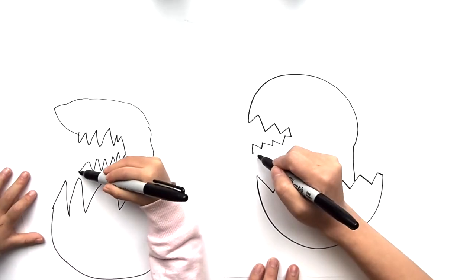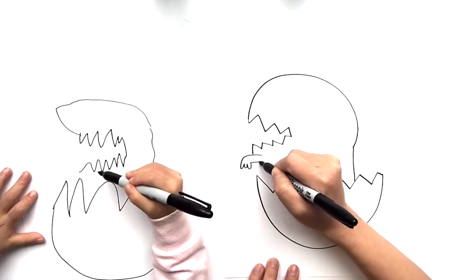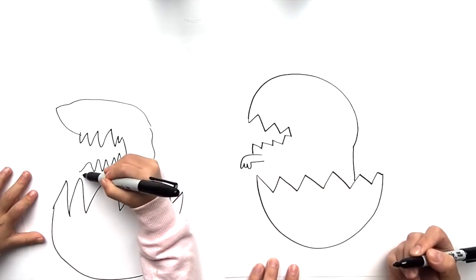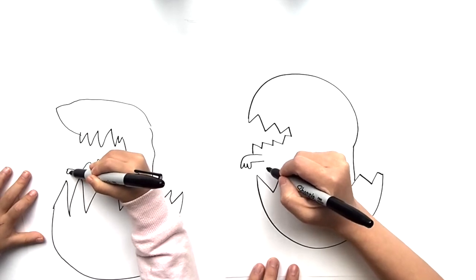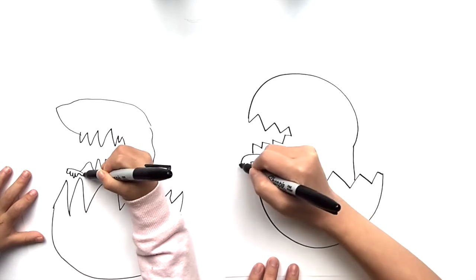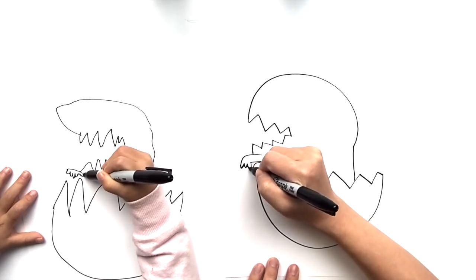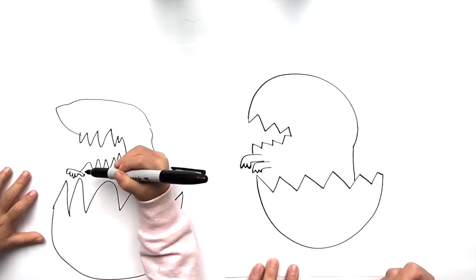Good. And now we're going to draw its little arms. Yeah, good. And then his other arm. So we can definitely make his claws much pointier than what I did.